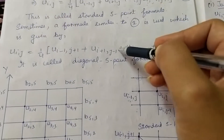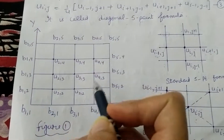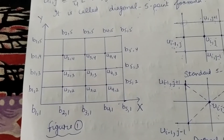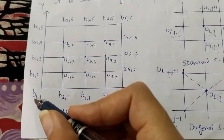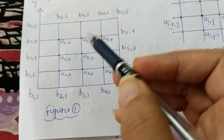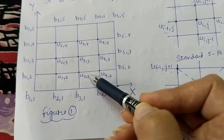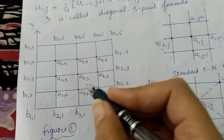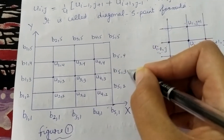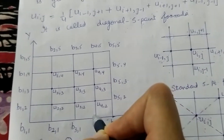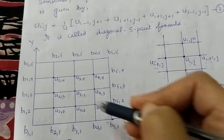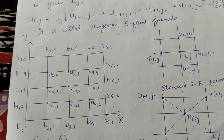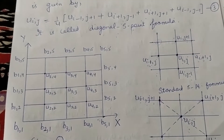In the standard five-point formula the values used are the upside, downside, left side, and right side neighbors. In the diagonal five-point formula the values used are all four diagonal points relative to u(i,j). The mesh boundary values will be given in the question, and you have to find the interior mesh points using these two formulas.